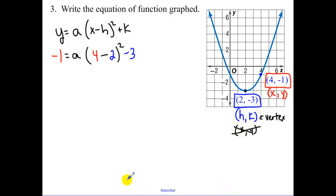Okay, now all we have to do is solve. 4 minus 2 is 2. 2 squared is 4. I add 3 to both sides. A is equal to 1 half.